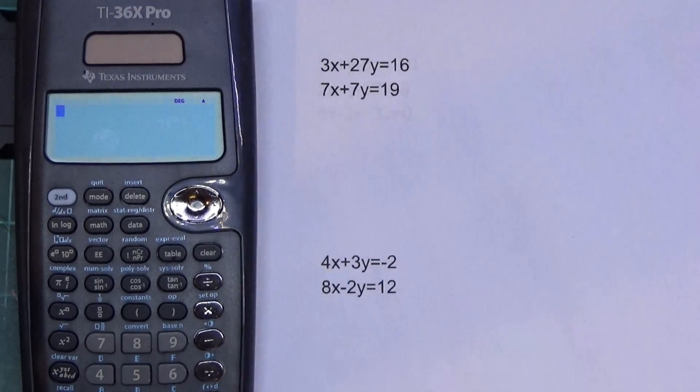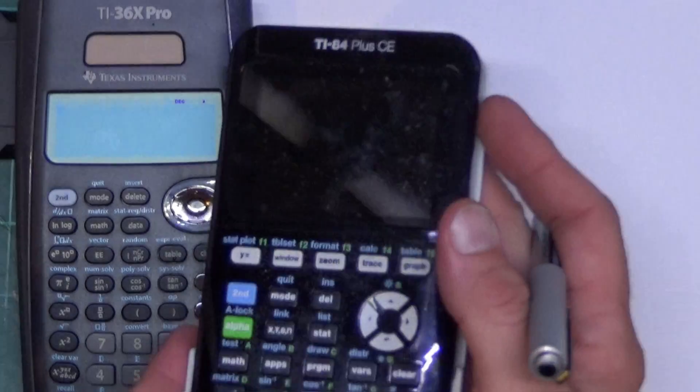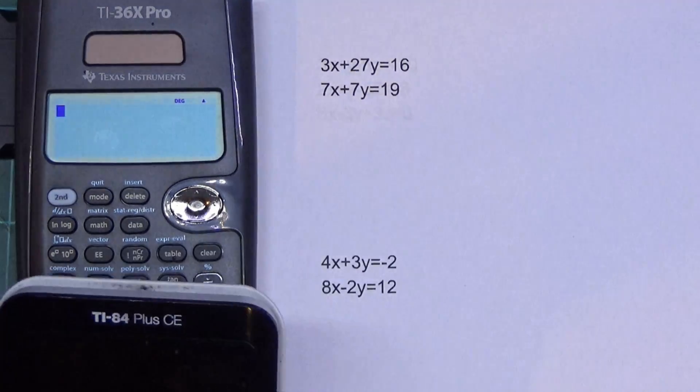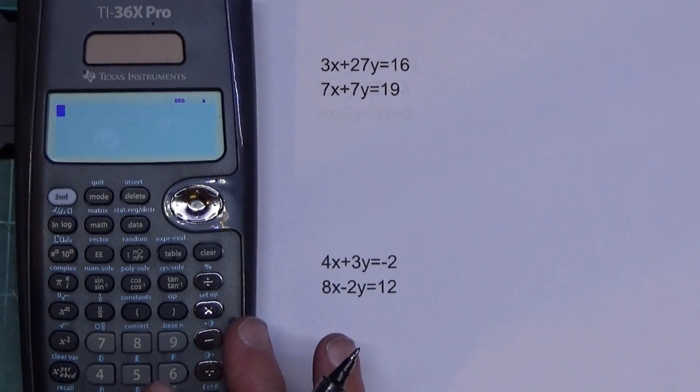It can handle two equations with two variables, three equations with three variables. Now, if you're using a TI-84, it works a little differently than this. This is actually a feature of the 36 that other calculators don't have.